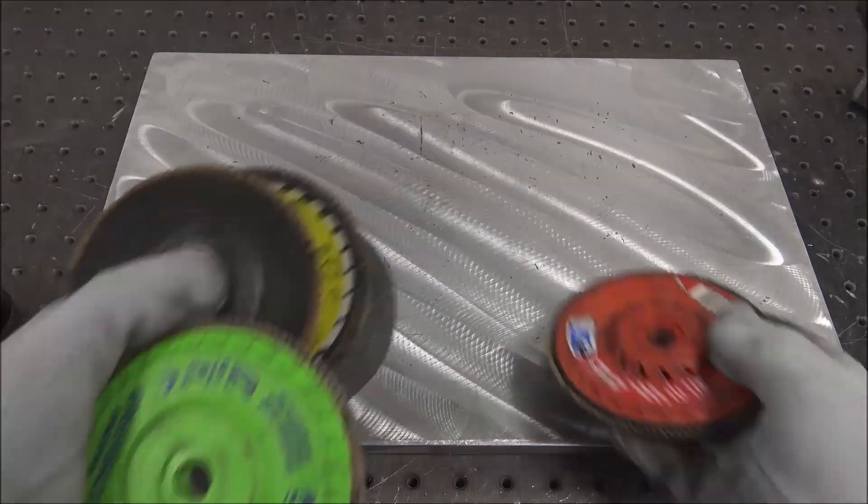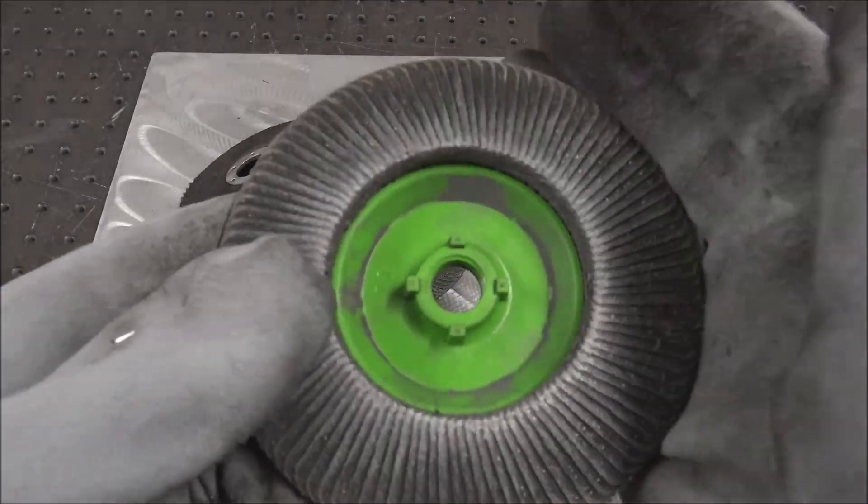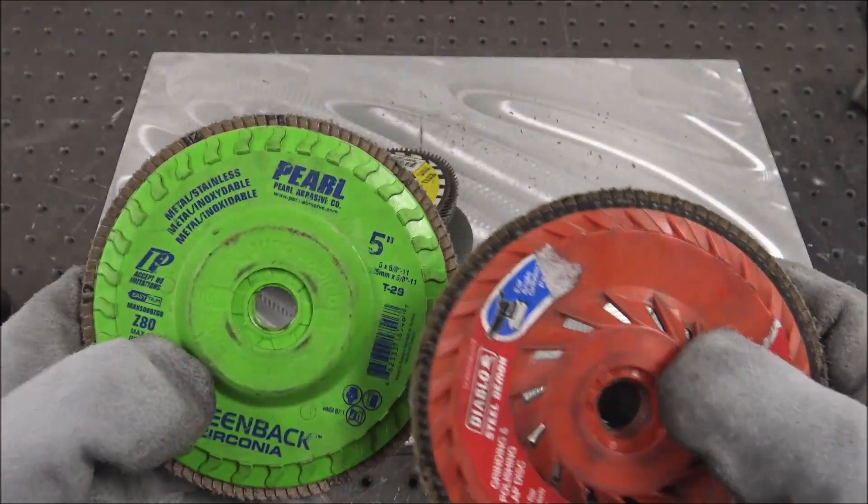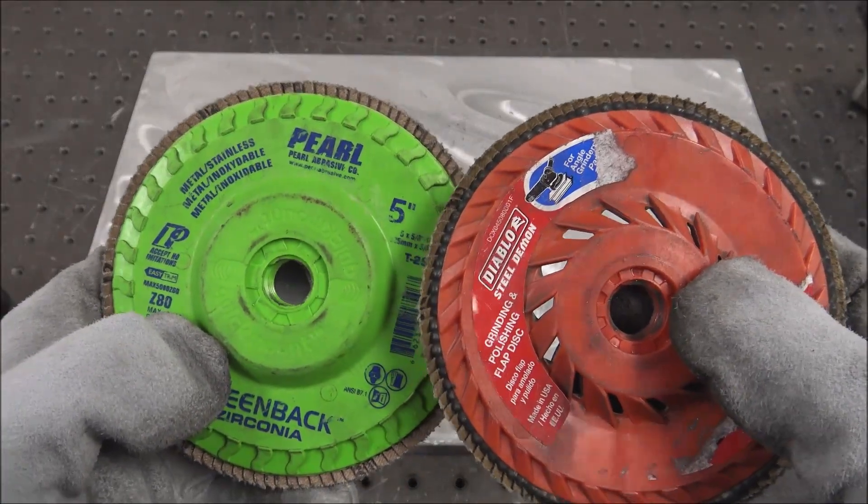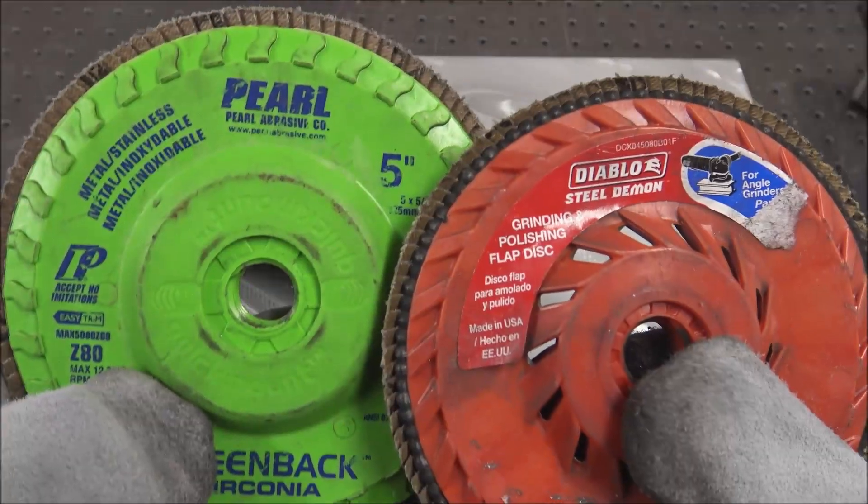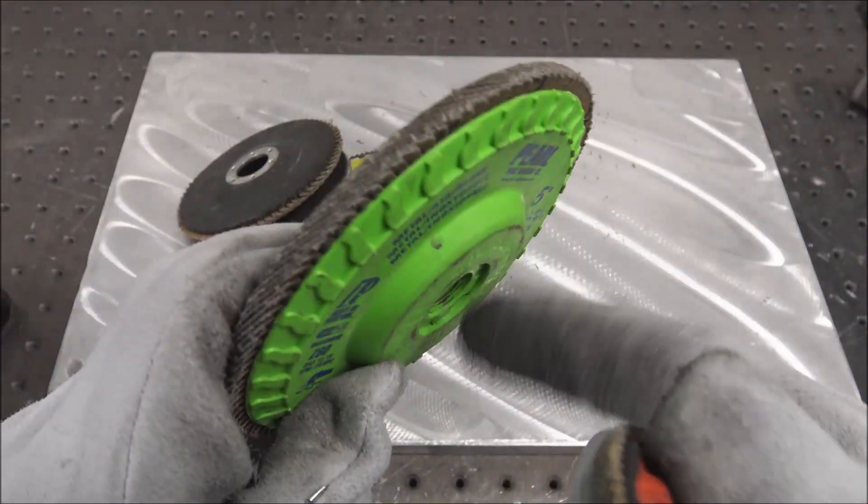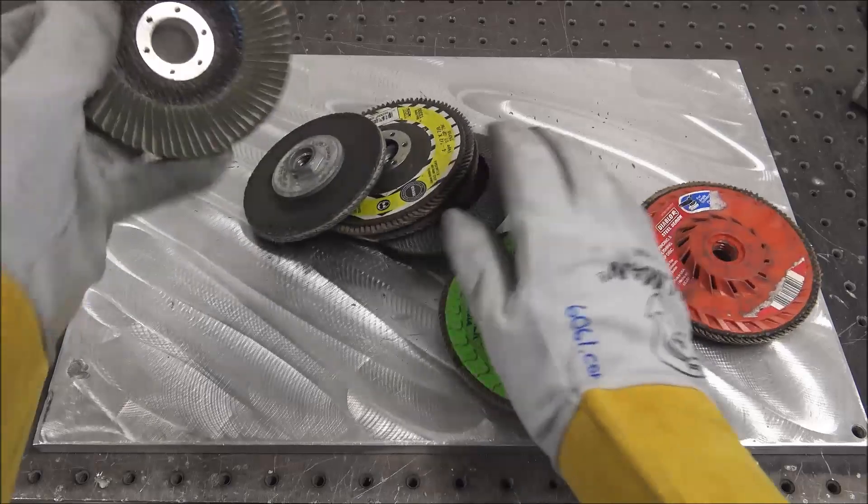You'll want some flap discs for your four and a half inch grinder. I've tried lots of different brands of these, and you usually get what you pay for. These ones are two of my favorites. I like the ones that have the threads integrated into them, not the ones where you have to use the threaded nut.